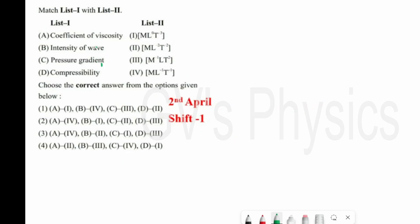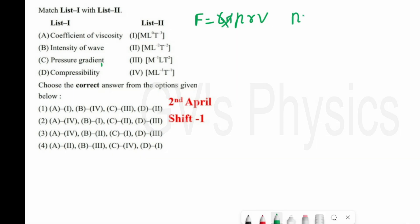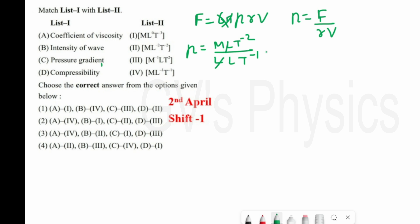Next is a most important question with slightly higher-level quantities. First one is coefficient of viscosity. Using Stokes' formula F = 6πηrv, we get η = F/(rv). Substituting: η = MLT⁻² / (L × LT⁻¹). The L terms cancel, leaving ML⁻¹T⁻¹. So A matches with 4.